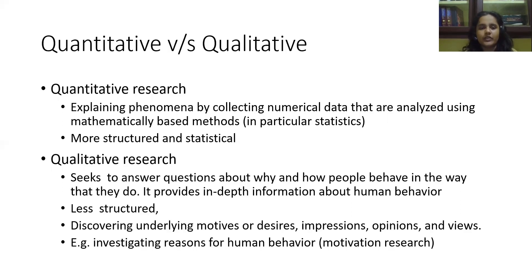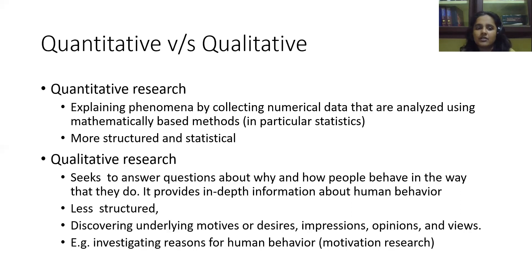Whereas in qualitative research, we will be trying to seek answers about why and how people are behaving in a particular way. Here we are analyzing human behavior. We will be discovering underlying motives, desires, impressions, opinions, and views of the people. This research is mainly done in motivational research by investigating reasons for a particular human behavior. For example, suppose we want to find out why people are going out in spite of lockdown in this pandemic. There may be many reasons: people are bored, they don't want to sit at home, they are depressed, or maybe they just want to rebel. These are all qualitative research. Here the data gathered is non-numerical in nature.